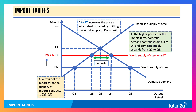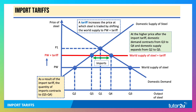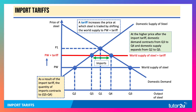Now with the tariff, the quantity of imports contracts because the tariff increases the world supply price to PW plus tariff. At the higher price there's a contraction of domestic demand from Q3 to Q4, and an expansion of domestic supply from Q2 to Q5, meaning the quantity of imports shrinks to Q5–Q4. So a tariff is designed to cause expenditure switching and a fall in the quantity of imports because they become more expensive.